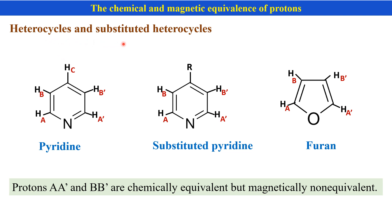Heterocycles and substituted heterocycles: in the case of pyridine, there are three sets of protons, but HA and HA' are chemically equivalent but magnetically non-equivalent. Similarly, HB and HB' are also chemically equivalent but magnetically non-equivalent.